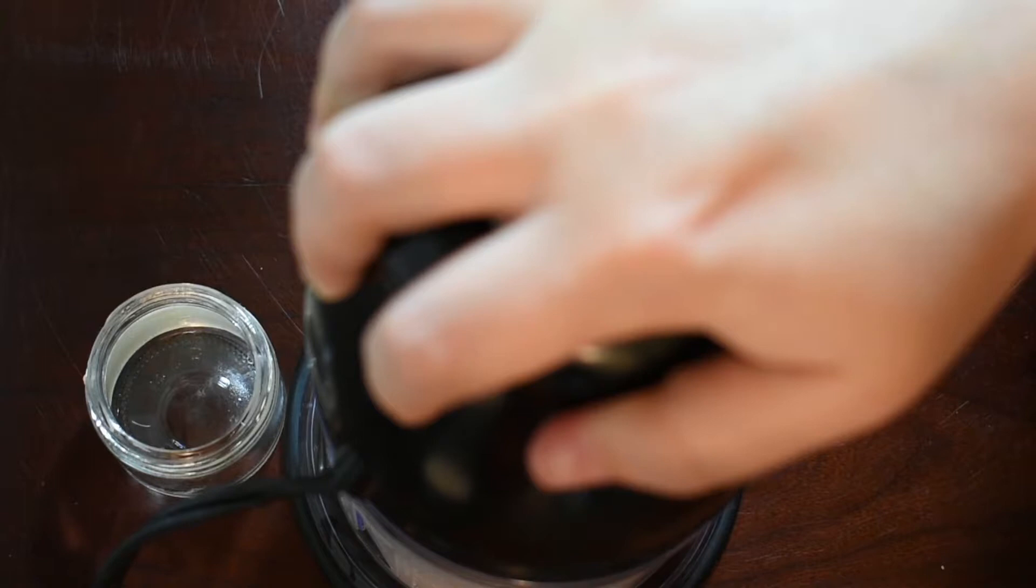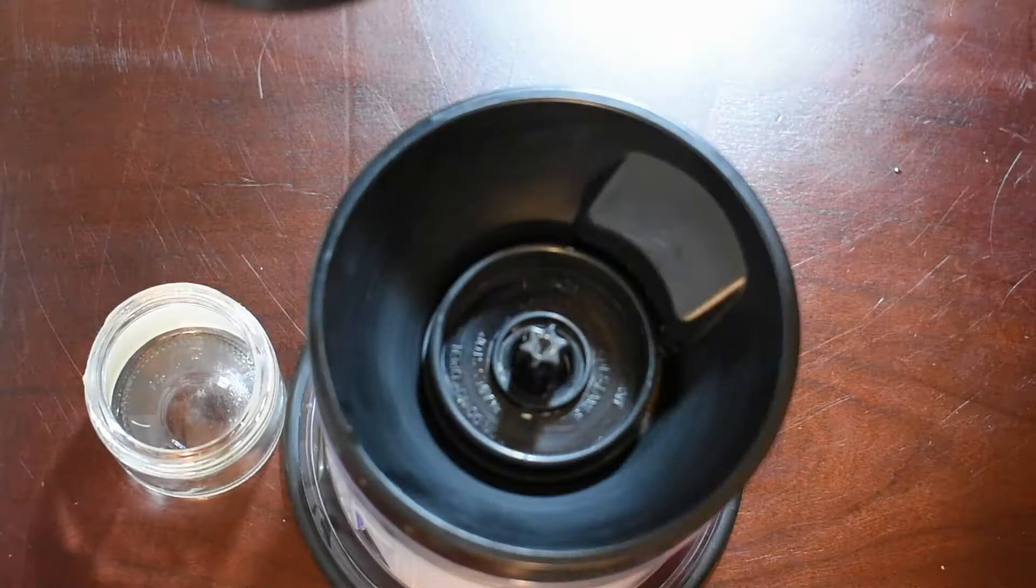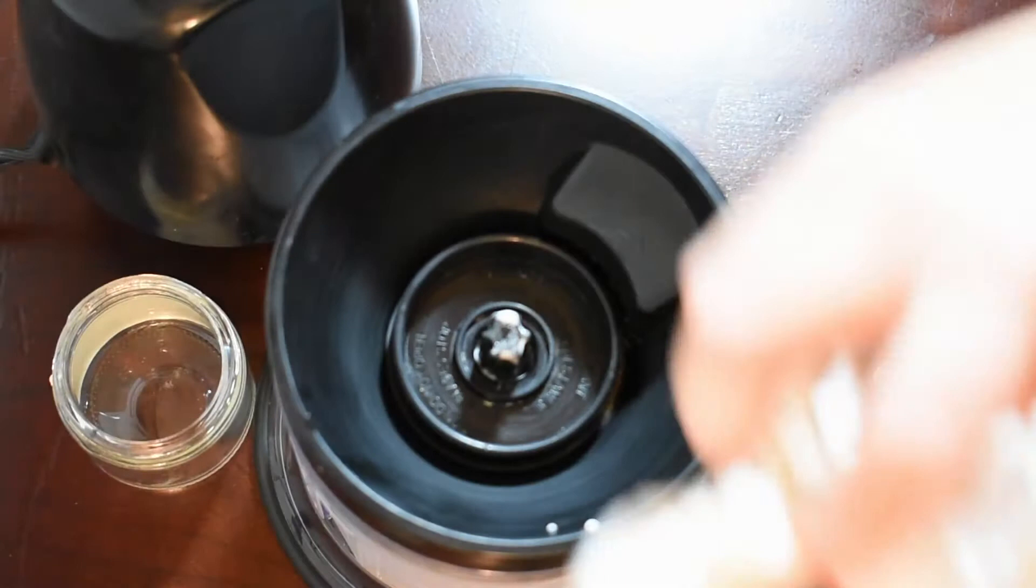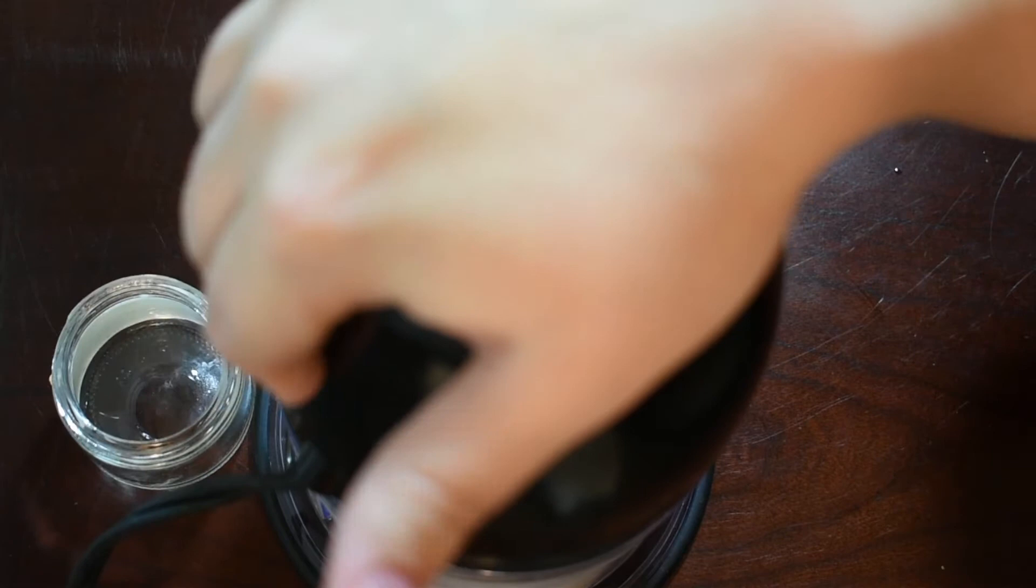As I'm blending this, I'm going to open it several times and try to show you the consistency, but I don't really get that stiff peak type of meringue consistency. What I'm getting is slimy soupy egg white mess.